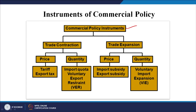In terms of price and quantity, during trade contraction and trade expansion we follow certain policies and measures. For example, tariff and export tax are tariff-related measures used during trade contraction, along with import quota and voluntary export restraint (VER). During trade expansion we use import subsidy, export subsidy, and voluntary import expansion as measures.